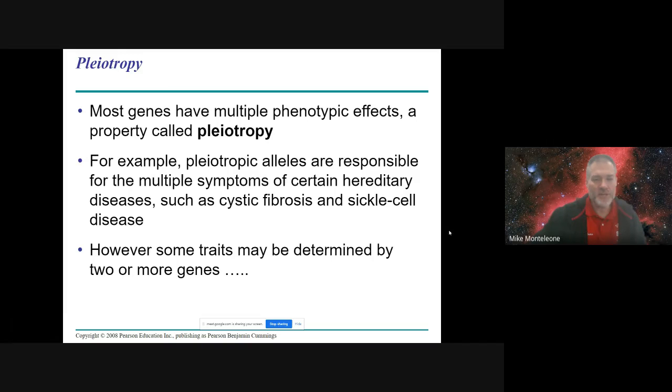All right, a couple of terms here. Pleiotropy. Pleiotropy is when one gene has multiple phenotypic effects. So an example of this might be the melanin gene, where your melanin gene affects hair color, eye color, and skin color.